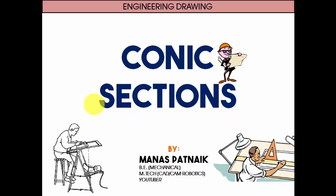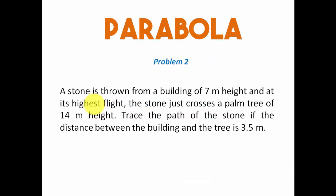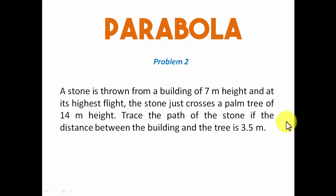Hi there guys, this is your friend and tutor Manas, and it's going to be yet another session in this lecture series based on conic sections. I'm going to be taking up one more problem based on parabola. Problem number two: a stone is thrown from a building of seven meter height, and at its highest flight the stone just crosses a palm tree of 14 meter height. Trace the path of the stone if the distance between the building and the tree is 3.5 meters.